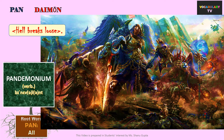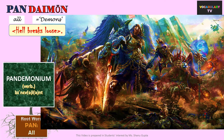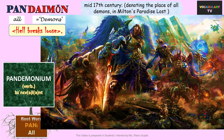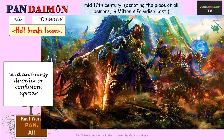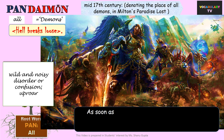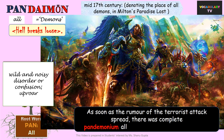After Gods, we have the demons. Our next word is Pandemonium, which contains the word demon. The word literally means 'all demons' and refers to a state where demons are all around and let loose — resulting in wide and noisy disorder, confusion, and complete chaos. A similar situation is conveyed by the idiom 'all hell breaks loose.' An example sentence: As soon as the rumour of the terrorist attack spread, there was complete pandemonium all around and everyone just panicked.